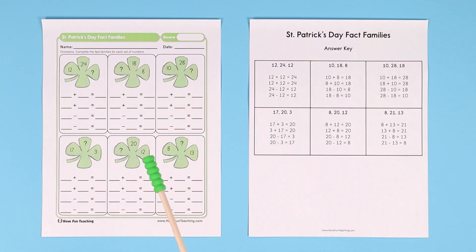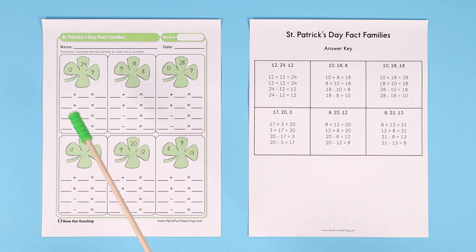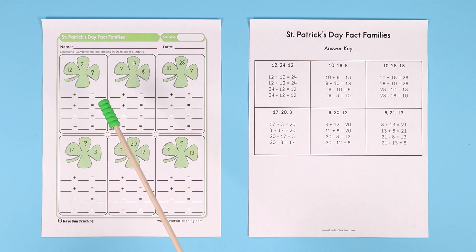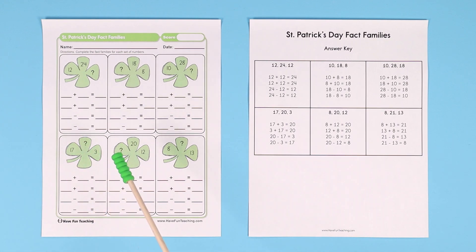This is a fun math worksheet for teaching fact families. A fact family is a group of three numbers that you can add together and subtract using the same three numbers.